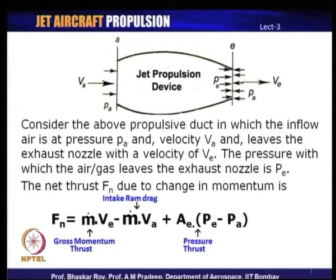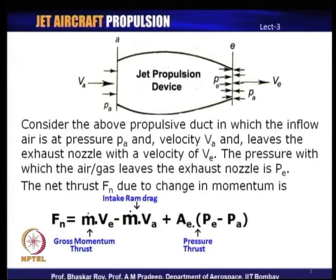We assume for now that the entry mass flow and exhaust mass flow are equal, though we shall see later they may be slightly different. The second term, m-dot times V_a, is the momentum with which the flow is entering the inlet of the jet propulsion device, and it is referred to as intake ram drag — the momentum with which the air mass hits the propulsion device at entry, creating a drag component.